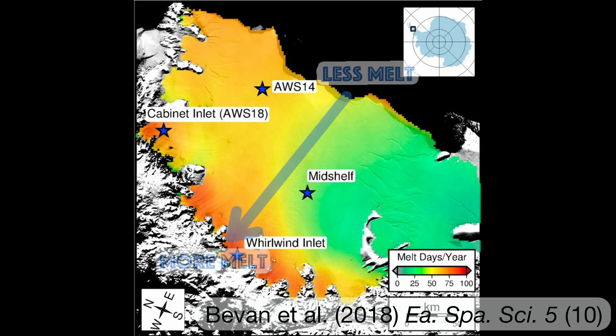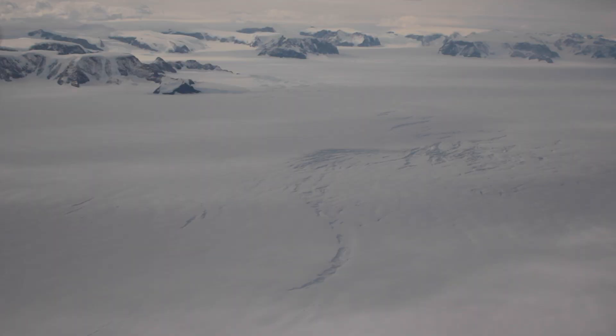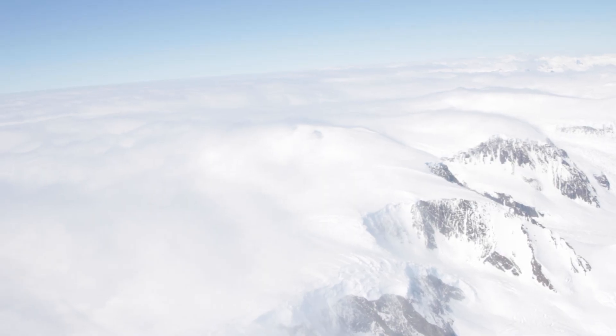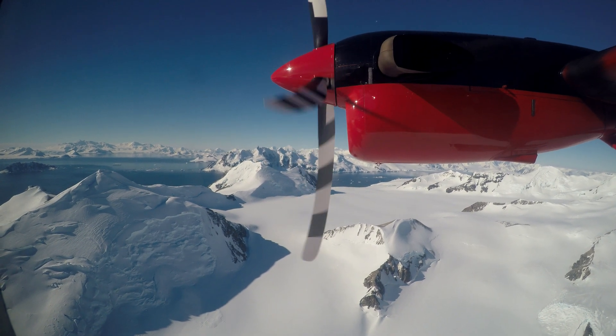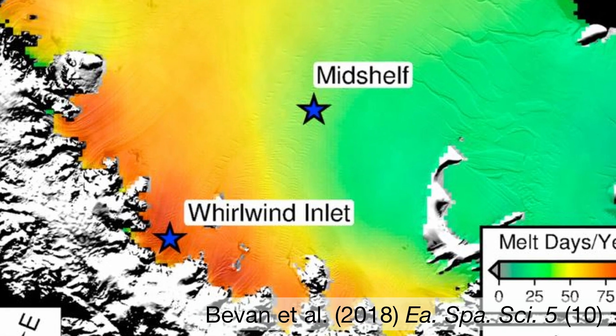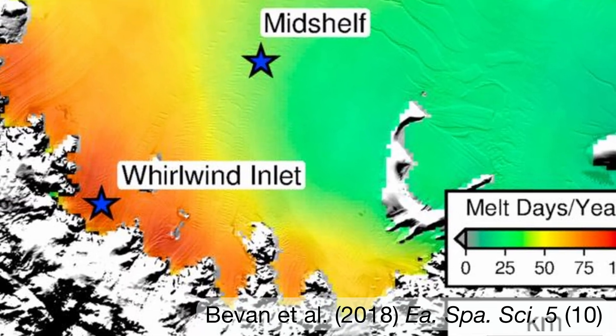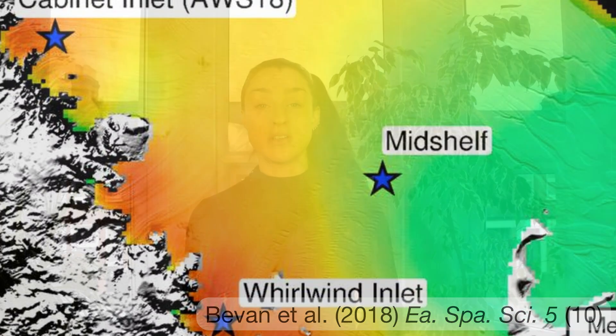Lots of different models have been used to simulate conditions over Larsen C, each with their own individual strengths and weaknesses. However the real aim of the game is to make sure that any model can capture the real life patterns of surface melting and the atmospheric conditions shown from the limited observations that we do have. Crucially, the east-west gradient in surface melting that is driven by the occurrence of foehn winds — these warm dry winds occur in the immediate lee of steep terrain, just like we have on the Antarctic Peninsula. Satellite observations show that melting is concentrated in the inlets closer to the mountains, as well as further north where temperatures are warmer and we get more solar energy reaching the surface of the ice shelf.